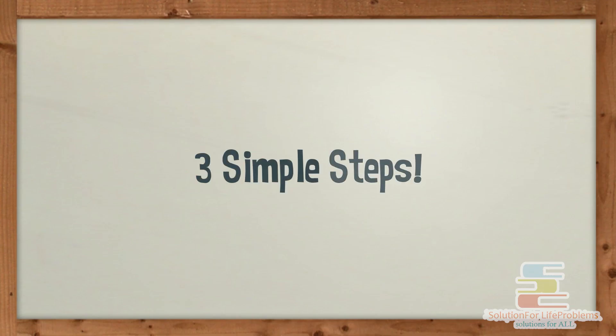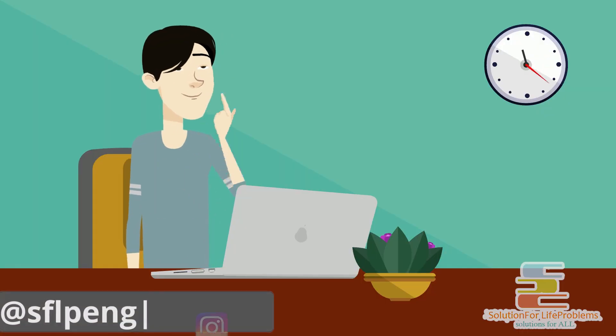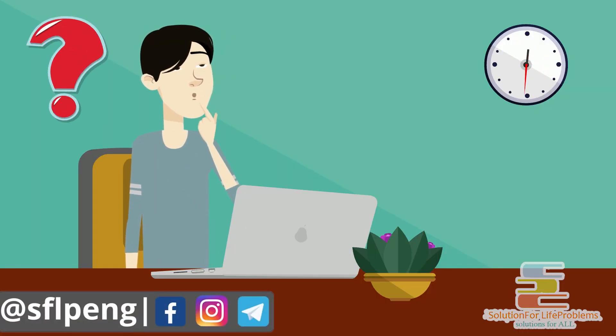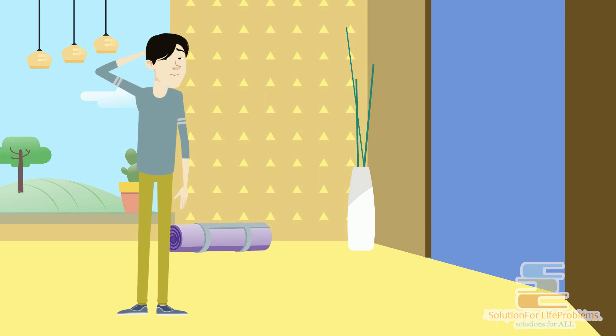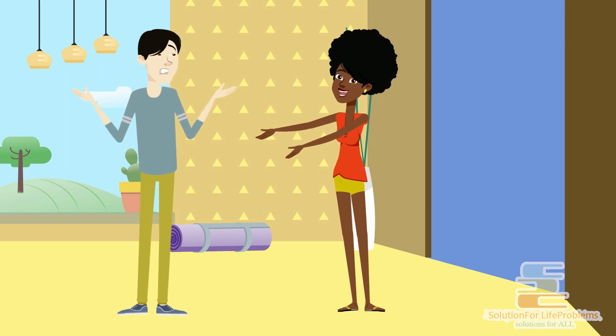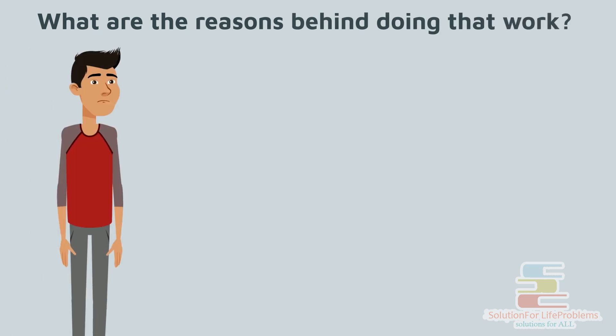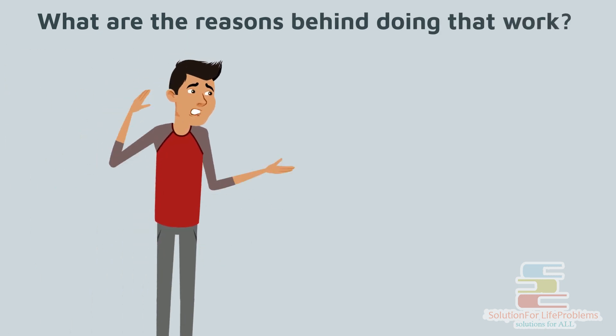So there are three simple steps that we need to know. The first step is to clarify why. It means if you want to do something, then you should know why do you want to do that. Is it coming from inside or someone else from outside is pushing you to do that work? What are the reasons behind doing that work? You have to clarify why and what.